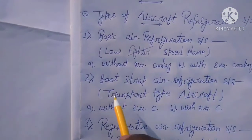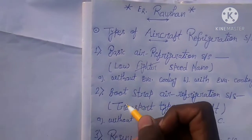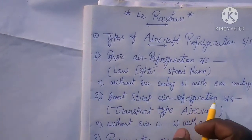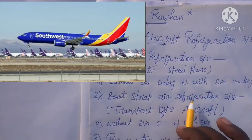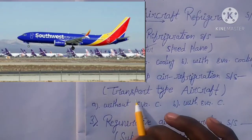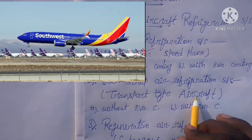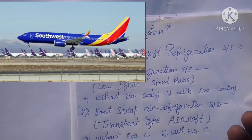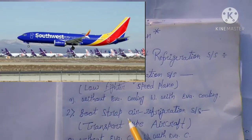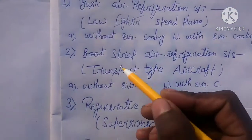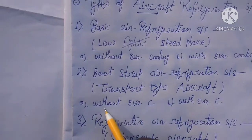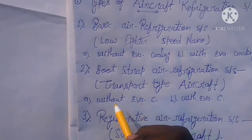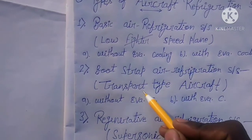Second is the bootstrap air refrigeration system. These are used in transport type aircraft — also called transport type aeroplanes. Again, two categories fall under this: without evaporative cooling system, and with evaporative cooling system. Both are used in transport type aircraft.